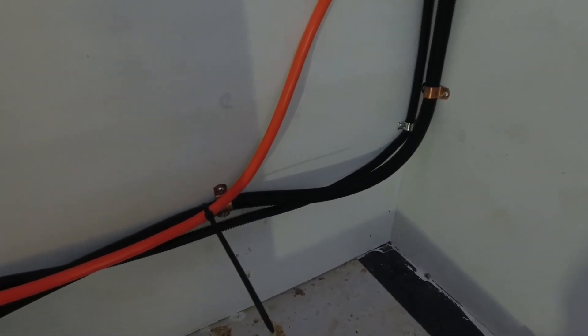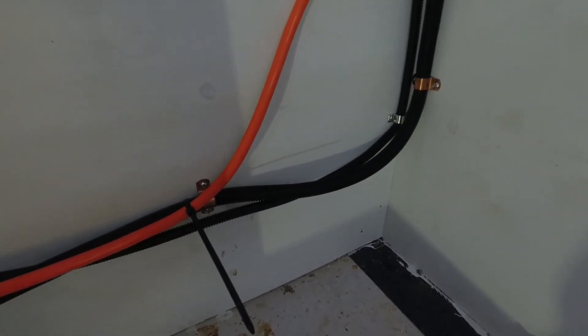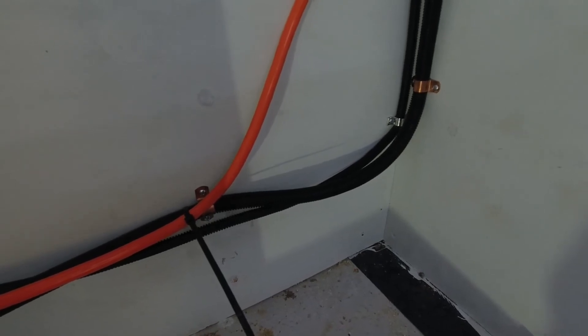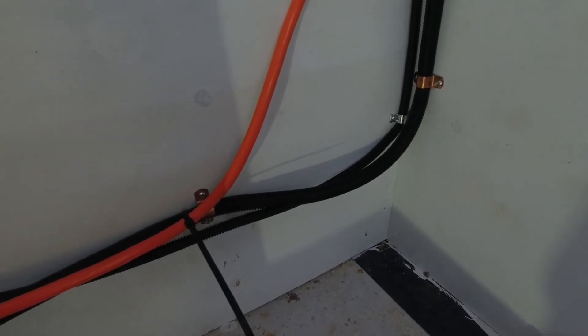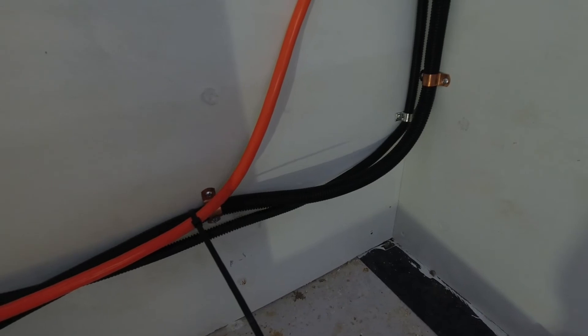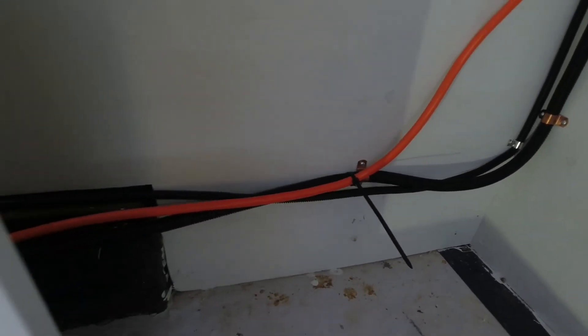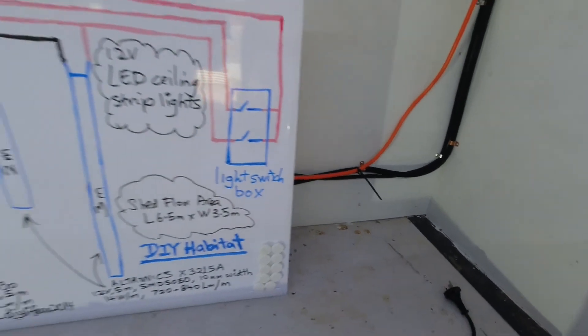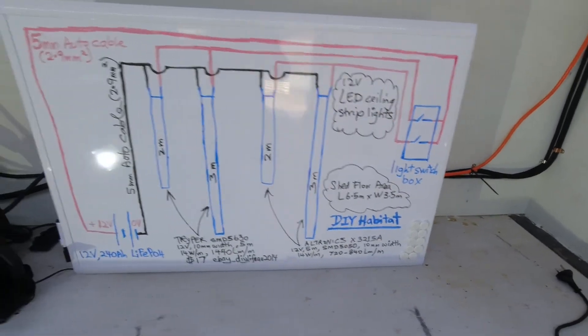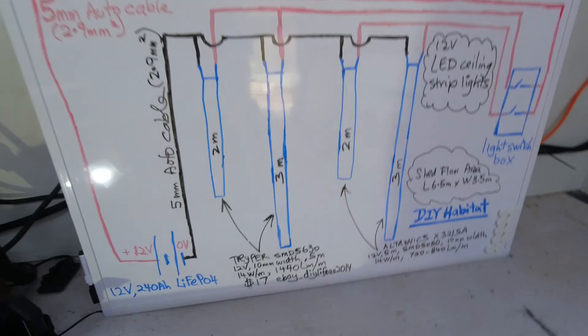The second black split loom contains my photovoltaic 6mm square power cable from the solar panel. The cable extends behind this whiteboard.